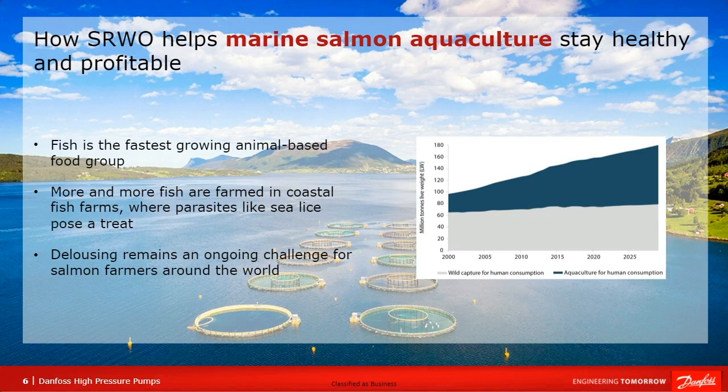Salmon farming or salmon aquaculture is a growing industry driven by global population growth. It's also driven by increasing consumer wealth and changing dietary preferences. Today fish is actually the fastest growing animal-based food group, and more of the fish that we buy in supermarkets comes from farmed areas.